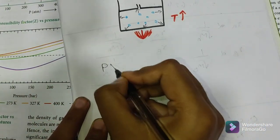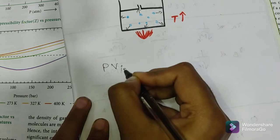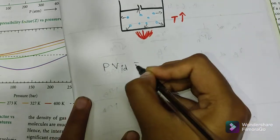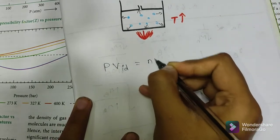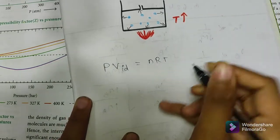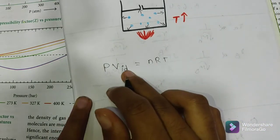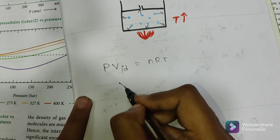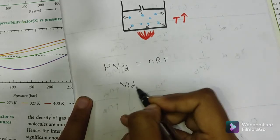Since P × V_ideal = nRT, then V_ideal = nRT / P. Therefore 1 / V_ideal = P / nRT.